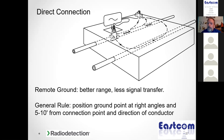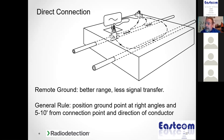To minimize this, move the ground spike to the other side and avoid crossing over other utilities. In theory, the further you move the ground spike away from your conductor at a right angle, the more distance you'll get on a locate — helpful for long-distance fiber runs or large-diameter gas transmission pipelines where you're trying to get two to three miles. Move that ground spike further away and use a longer ground rod driven deeper into the earth, reaching more moisture.